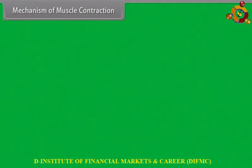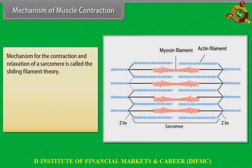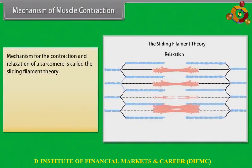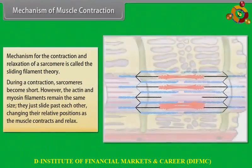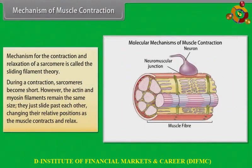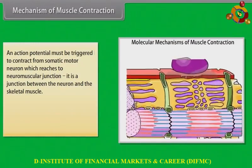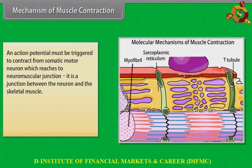Mechanism of muscle contraction. The mechanism for the contraction and relaxation of a sarcomere is called the sliding filament theory. During a contraction, sarcomeres become shorter; however, the actin and myosin filaments remain the same size — they just slide past each other, changing their relative positions as the muscle contracts and relaxes. An action potential must be triggered from a somatic motor neuron, which reaches the neuromuscular junction.